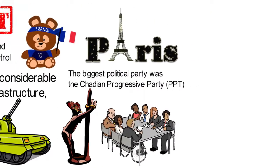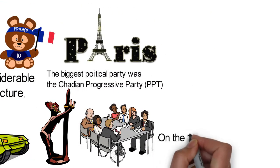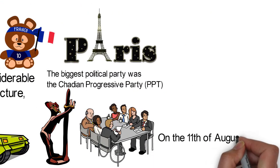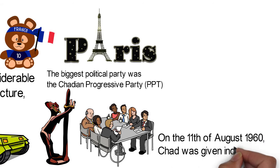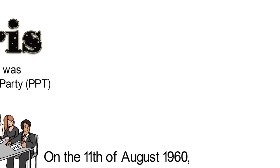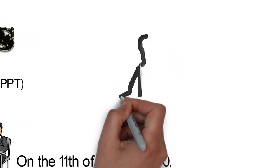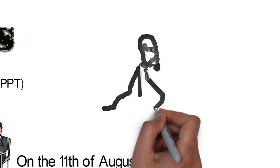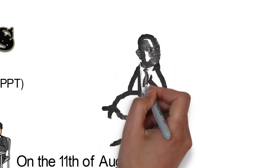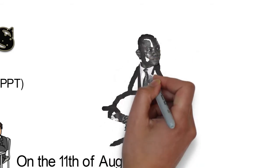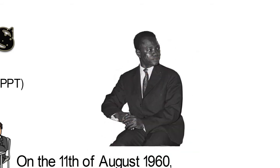Finally, on the 11th of August 1960, Chad was granted independence, and the leader of the Chadian Progressive Party, François Tombalbaye, became the country's first president.